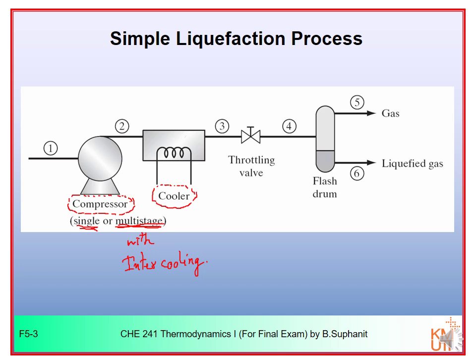Then we flash it through a throttling valve — a JT expansion. At point four you will have vapor plus liquid. You separate the vapor from the liquid using a simple flash drum, giving you gas and liquefied gas. The flash drum is just an adiabatic separator with no heat transfer with the surroundings.